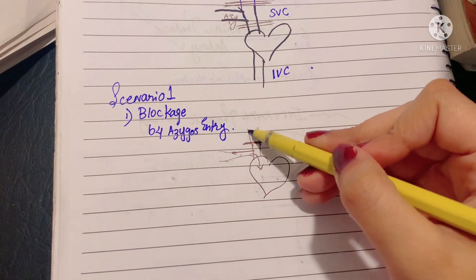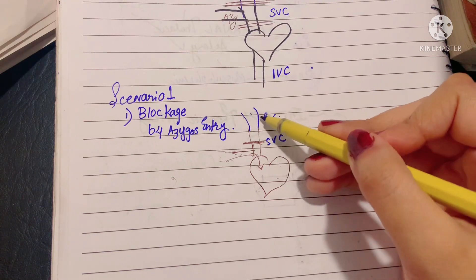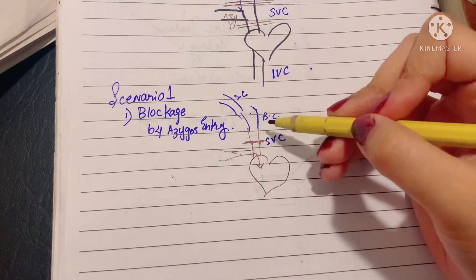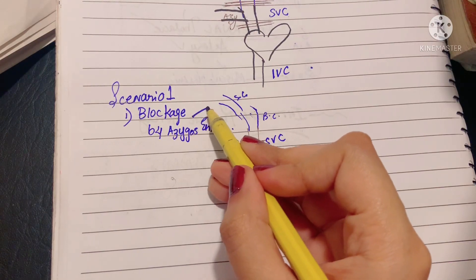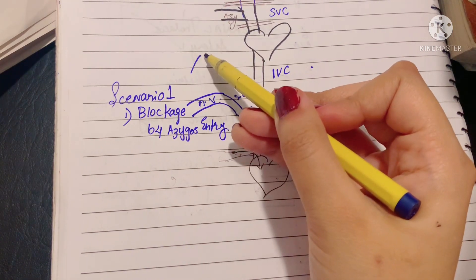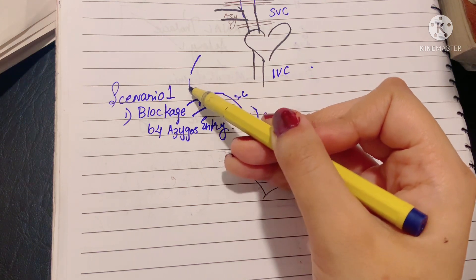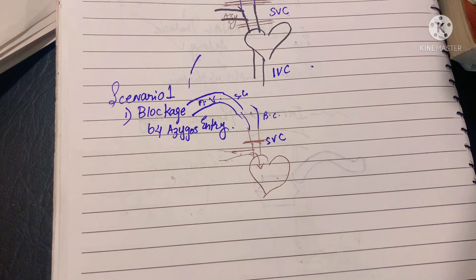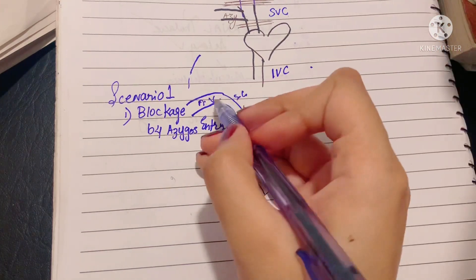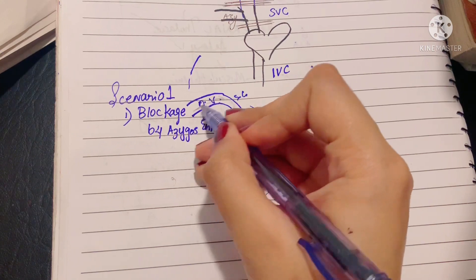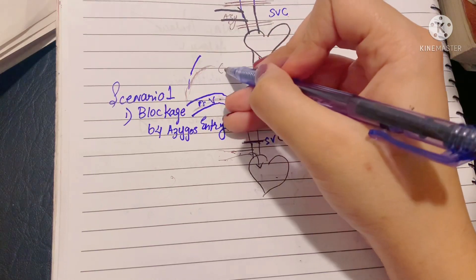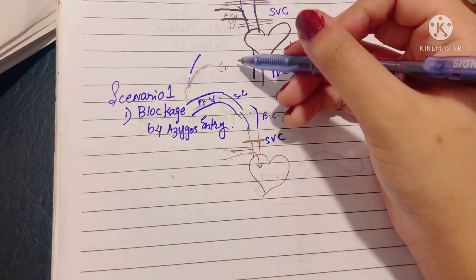The route works as follows: the superior vena cava's tributary is the brachiocephalic vein, and the tributary of the brachiocephalic vein is the subclavian vein. The subclavian vein is formed by the continuation of the axillary vein. The blood flows from the superior vena cava into the subclavian vein, then into the axillary vein, and from there into the subscapular vein.